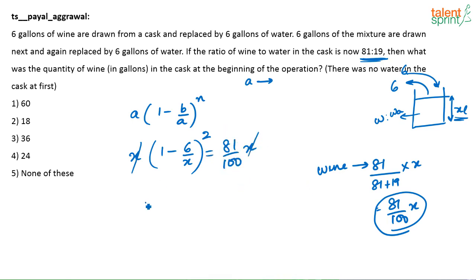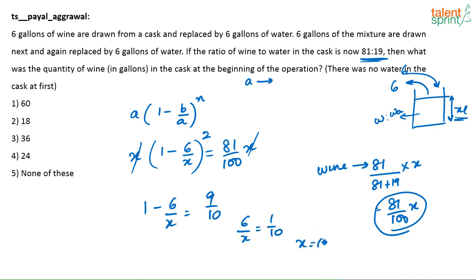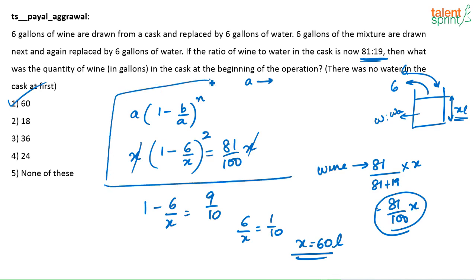So you have (1 minus 6 by x) squared equal to 81 by 100, which gives (1 minus 6 by x) equal to 9 by 10, or 6 by x equals 1 by 10, so x equals 60. Initially there was 60 liters of wine present in the vessel. It is very easy to solve using the formula — don't try any other method, it will be time consuming.